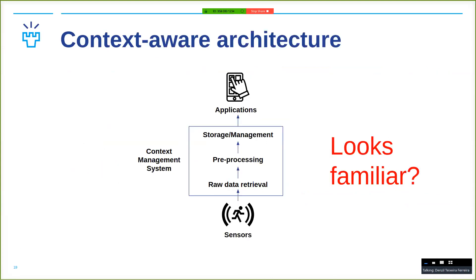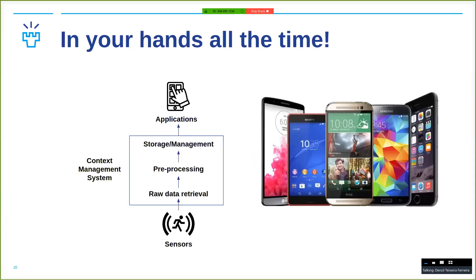If we think about the architecture of a context-aware app, you have the sensors, you get the raw data, you do some pre-processing, sometimes you might have to store or manage it so you remember things, and then you make an application. This looks like how a phone works — the operating system does some raw data processing to enhance how the phone works. So if you rotate your screen, the screen rotates with it. In a way, your phone is a context management system.